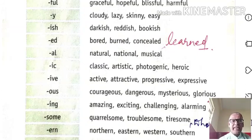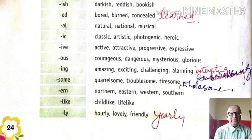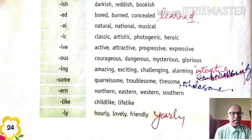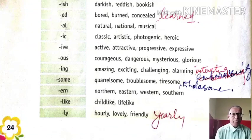-ern — from north to northern, east to eastern, west to western. -like — childlike, lifelike, warlike. -ly — hourly, lovely, friendly, yearly, annually. So in this way, we have seen the formation of adjectives with the help of suffixes.